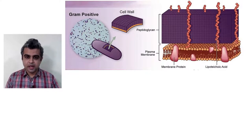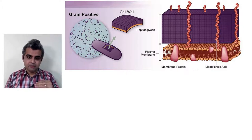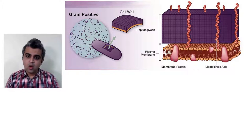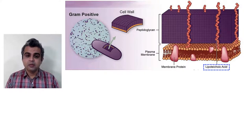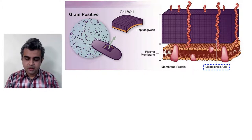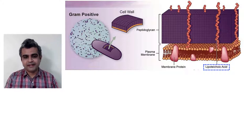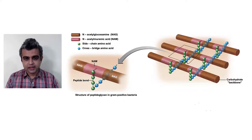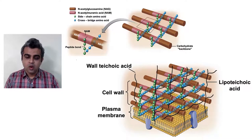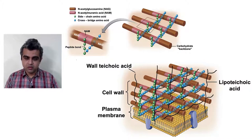In gram-positive bacteria, many densely packed layers of peptidoglycans are stacked above the plasma membrane. All these layers are connected to each other by teichoic acids, and lipoteichoic acids connect the entire peptidoglycan cell wall to the plasma membrane below. This results in a thick, multi-layered cell wall characteristic of gram-positive bacteria.